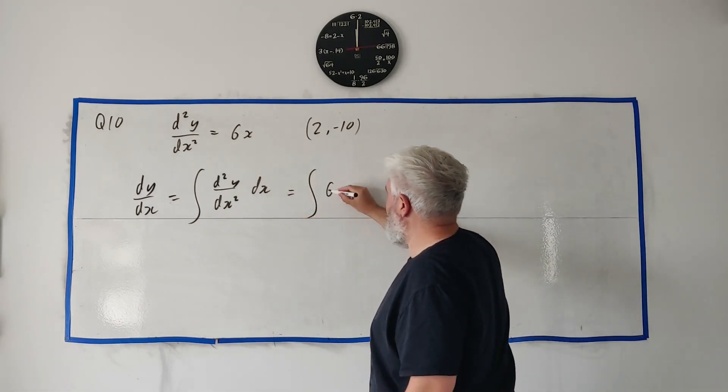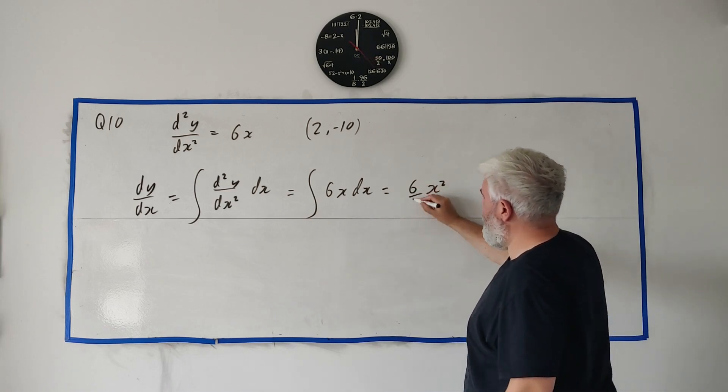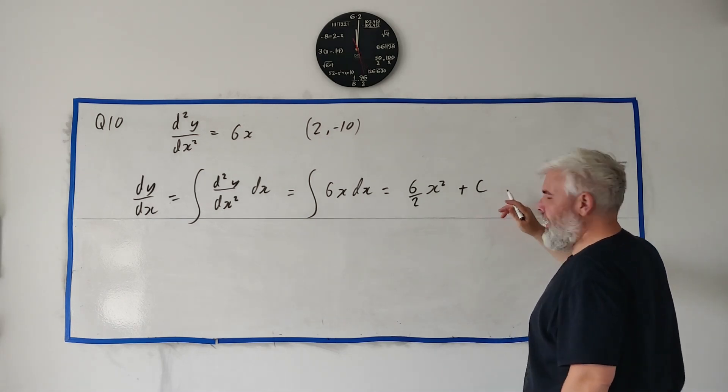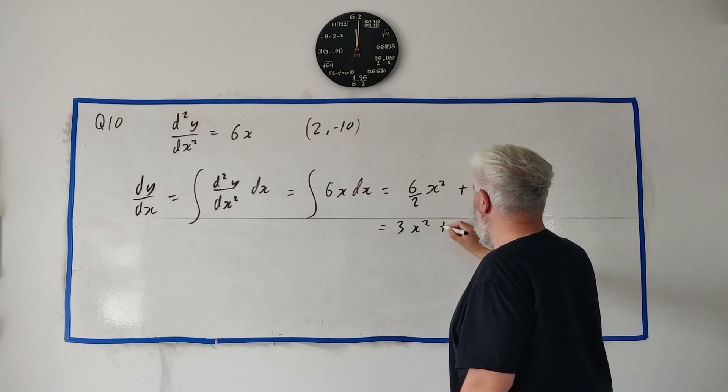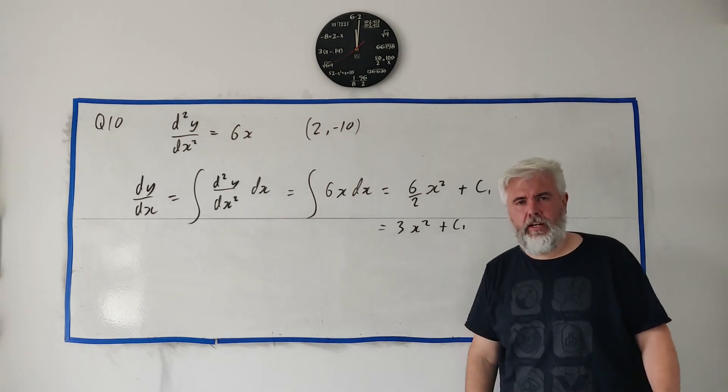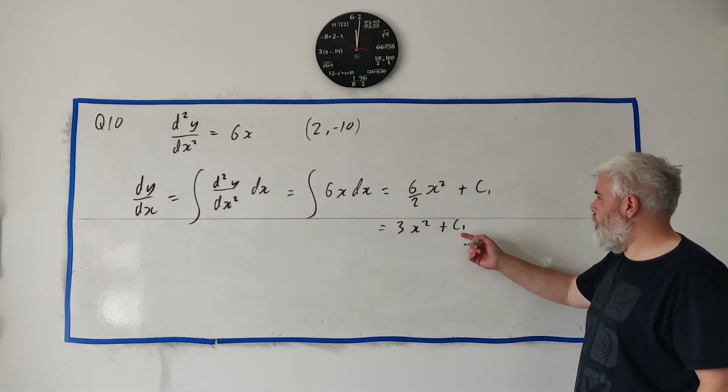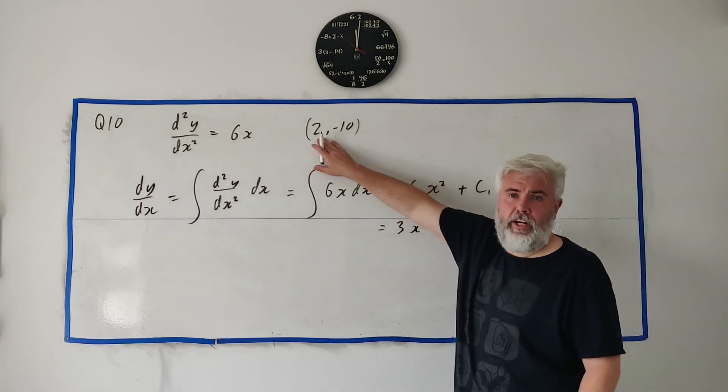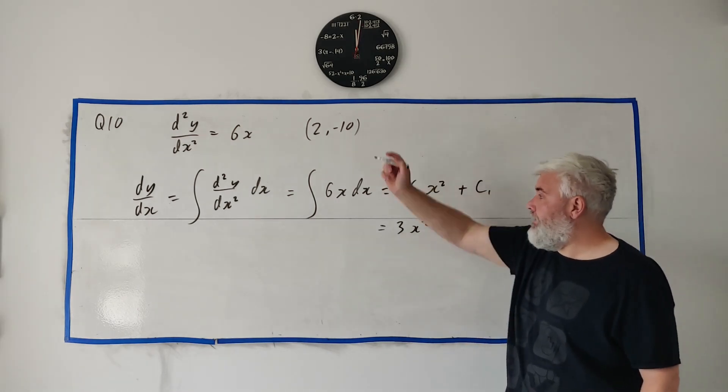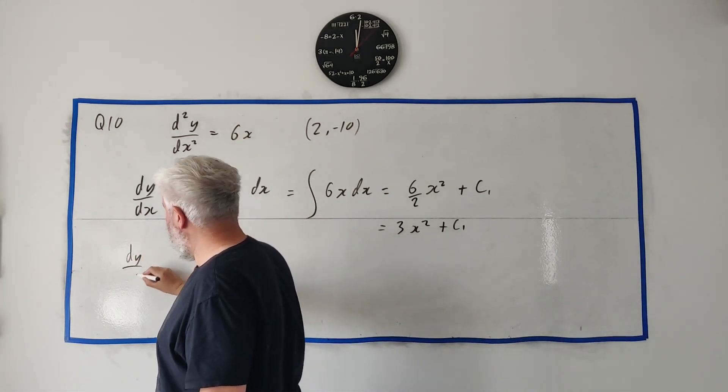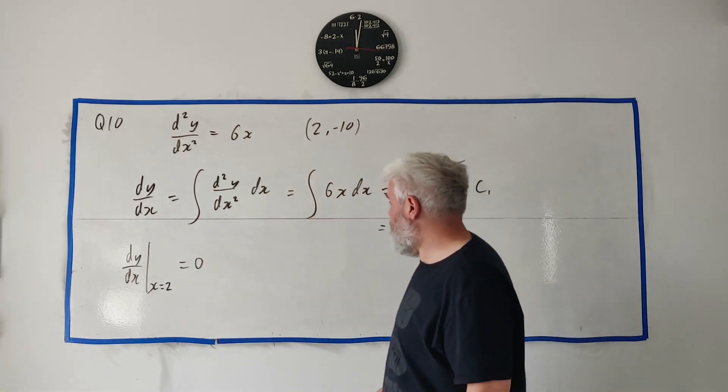That equals, simply integrate this and the x becomes x squared and then we end up dividing by the two and then we add a constant. I think we're going to have a couple of constants so let me just write c1 in this case. Clean that up we get 3x squared plus c1. We're sort of finished there, you might get stuck there, but they didn't ask for a constant they just wanted dy/dx. So we need to find what c1 is. So what other clues are there? This is a clue here, the stationary point. The stationary point does tell us something about dy/dx. dy/dx is equal to zero at the stationary point. So let me write that here. dy/dx at x equals 2, at x equals 2, that equals zero.